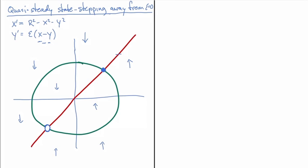And now x's, x directions: we have rightward movement here. We found that from the x phase line in the quasi-steady-state analysis, and outside we'll have leftward movement.